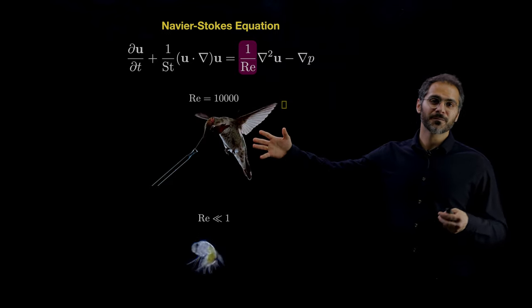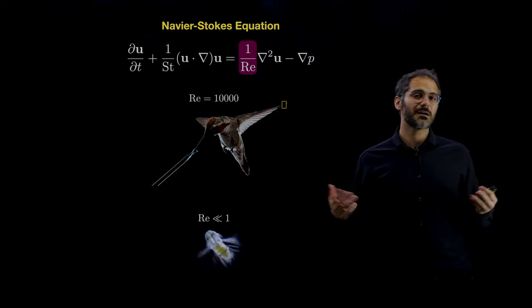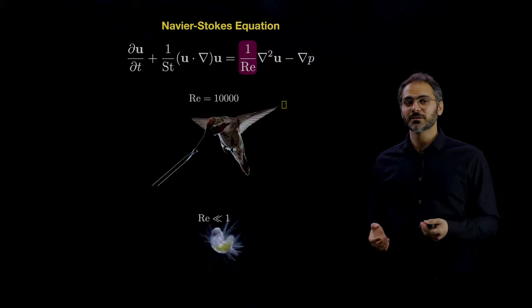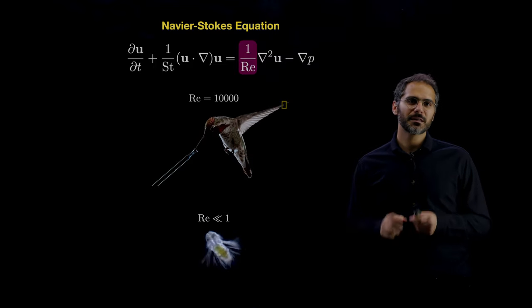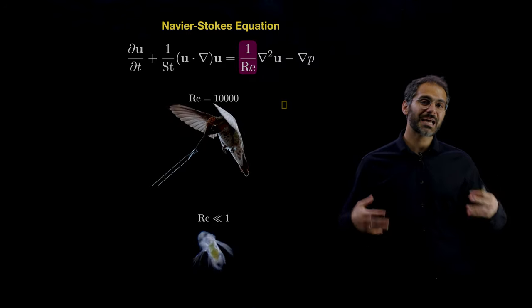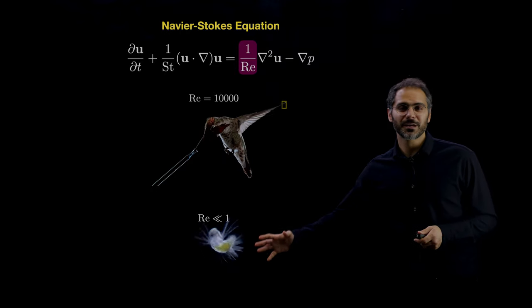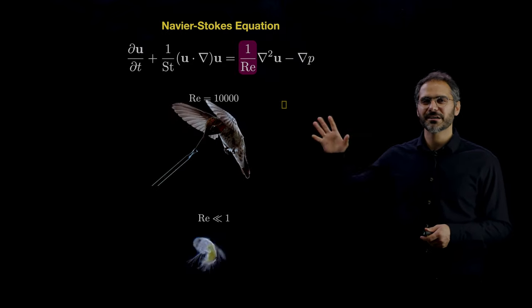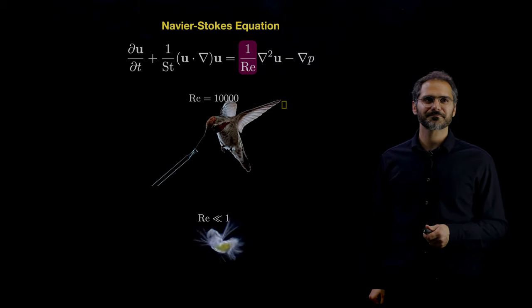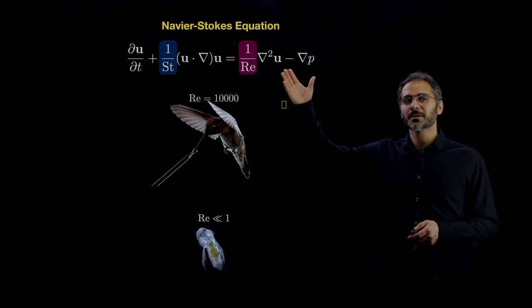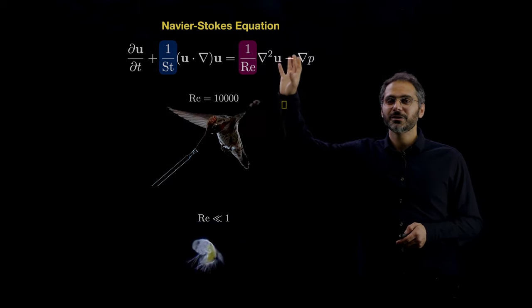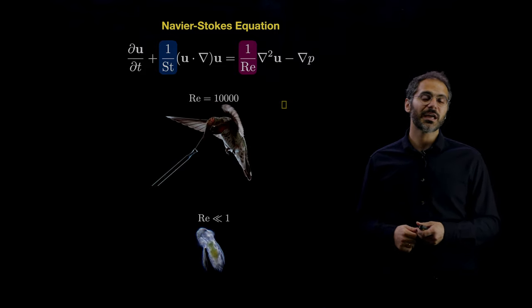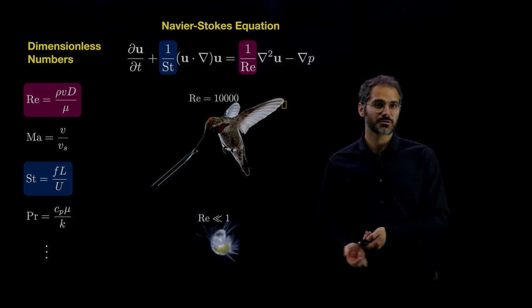The hummingbird has a fluid surrounding it with a Reynolds number of close to 10,000. A swimming microorganism has a Reynolds number much less than one. This means they experience their surroundings in a very different way. For the microorganism you can expect very laminar dynamics with parallel velocity fields, but for the hummingbird it's a very chaotic fluid. You can see this in the Navier-Stokes equation, where you can get rid of a term if the Reynolds number is very small.